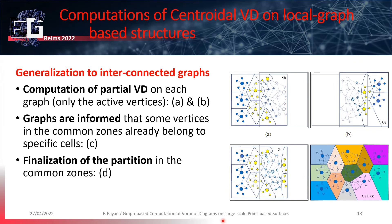Our main contribution is the extension of this concept to our local graph-based structure. Here is a school case in 2D with only two graphs. First, a partial diagram is computed on each graph by considering only the active vertices. For each graph, we obtain global cells in blue and partial cells in yellow whose shape is temporary, as they are connected to passive vertices — hatched in blue — that must be processed by another graph.